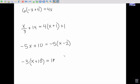And then the final equation there is going to be negative 3 times quantity x plus 10 equals 10x minus 7 times the quantity x plus 4.